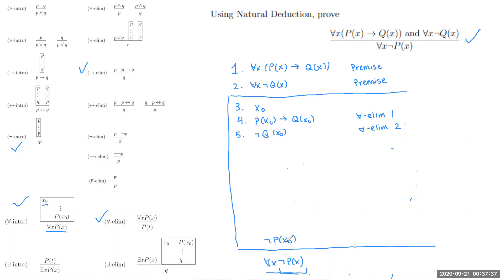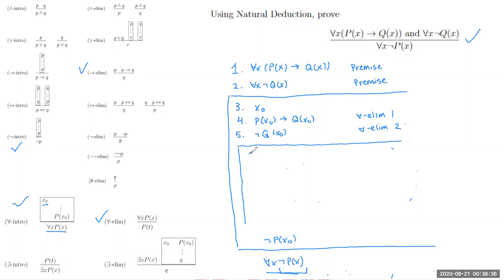We haven't used lines 4 and 5 yet. From line 4 we have P(x₀) implies Q(x₀), and to use →-elim we'd need P(x₀). From line 5 we have not Q(x₀), which suggests a contradiction with Q(x₀). Going with our intuition, let's use ¬-intro. On line 6, we open a new box and assume P(x₀).